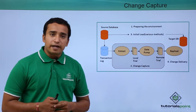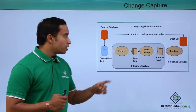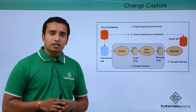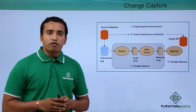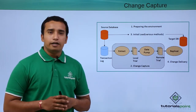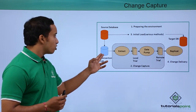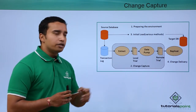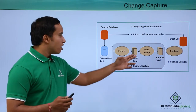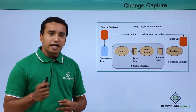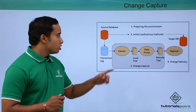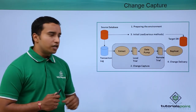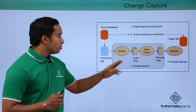So what does the extract process do? The extract process captures the data from the transactional logs — that is your redo log files, if it is an Oracle database. The extract process captures the data from the transactional logs, puts it into a trail file, and then you have a secondary extract process known as the data pump process. This is the primary extract process, which captures the data from the redo log files and puts it into a trail file.